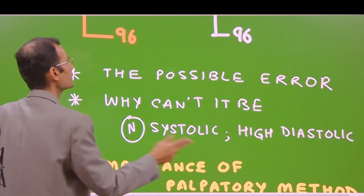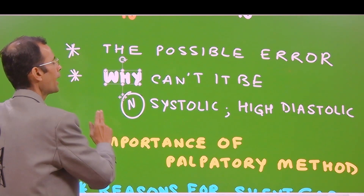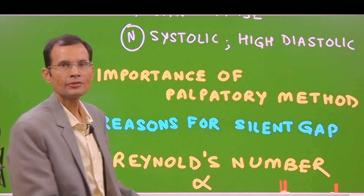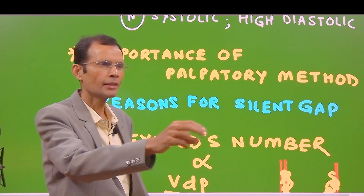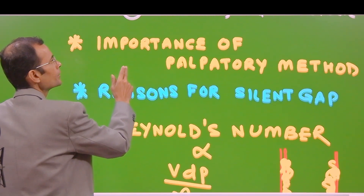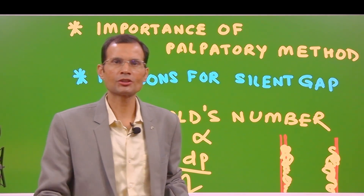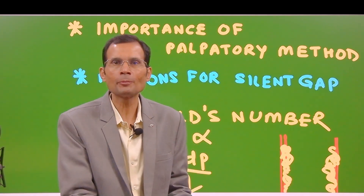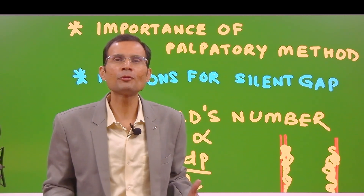So that was the answer to the MCQ. The most likely error is low systolic but normal diastolic. The other error — normal systolic and high diastolic — is less likely because we don't immediately remove the cuff when sounds disappear. We continue lowering the pressure, and if there is a silent gap, the sounds are likely to reappear. Now, what is the importance of the palpatory method? This is often asked in university exams, since palpatory method gives only systolic pressure while auscultatory gives both systolic and diastolic.